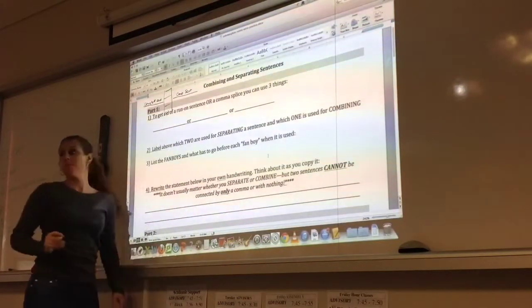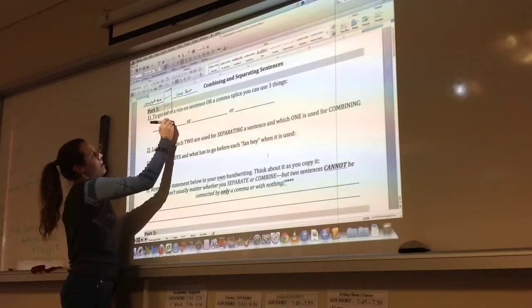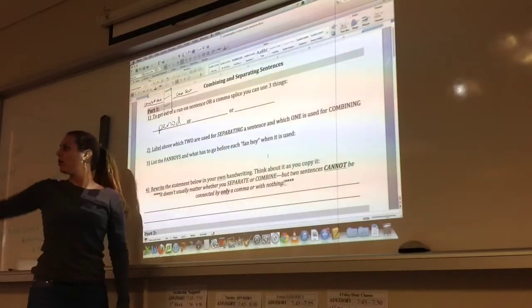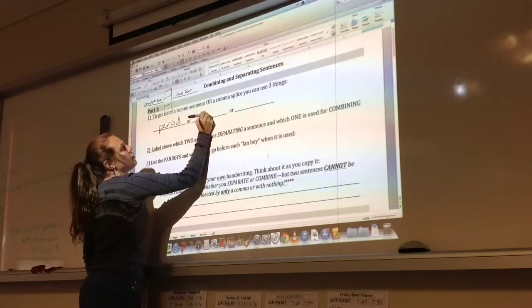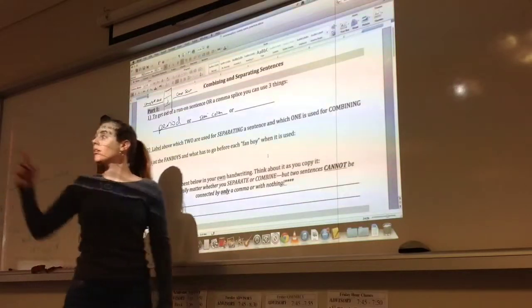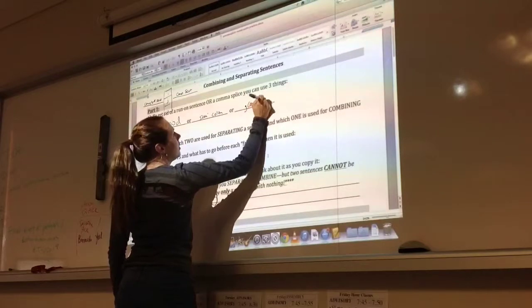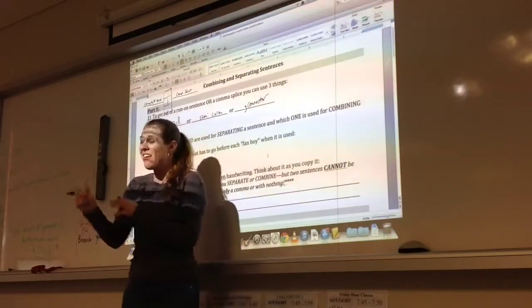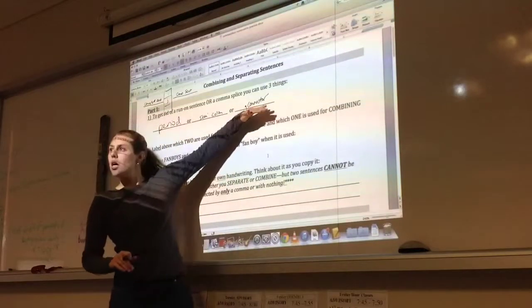So we said yesterday we have three things that can go between a sentence on one side and a sentence on the other. What were those three things? Give me one, Laura. A period. So you should have written here a period. Give me one more. Semicolon. A semicolon. Good work. And? Comma connector. Okay, comma connector. Which we talked yesterday about having a fancy word for as a coordinating conjunction, but you can call it a comma connector in my class.